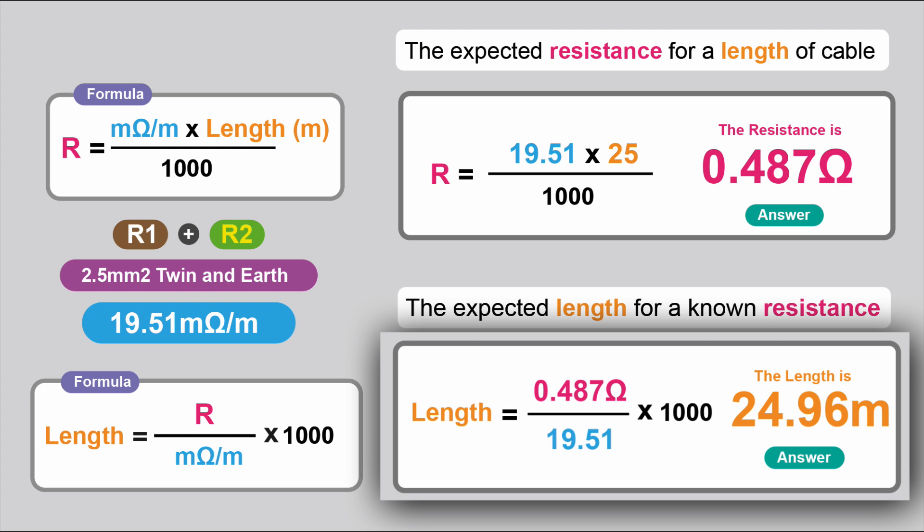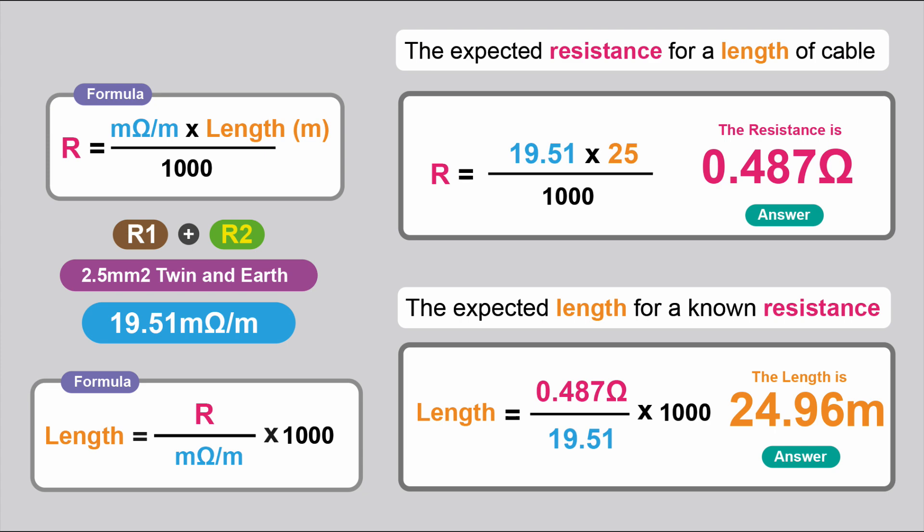As we can see before, it was 25 metres. We've lost a little bit in the maths, we're there and thereabouts. That's how you calculate the length from a known resistance, which can be really useful as well.